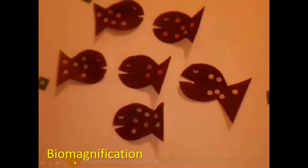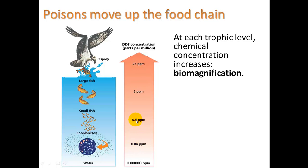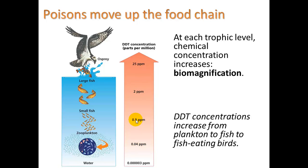These poisons move up the food chain at roughly a factor of 10x with each trophic step — so 2 times 10 is about 25, 0.4 times 10 is about 0.5, roughly.